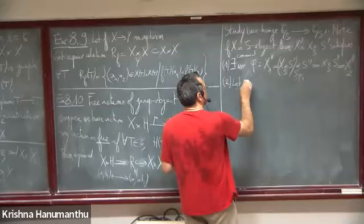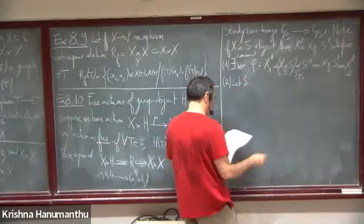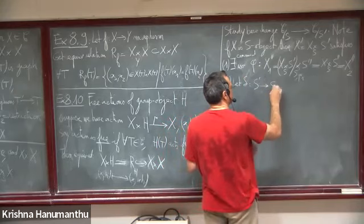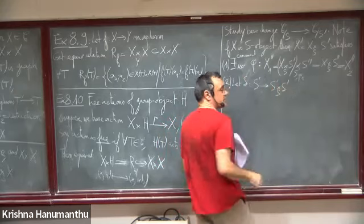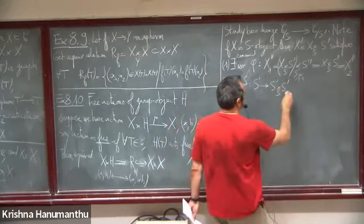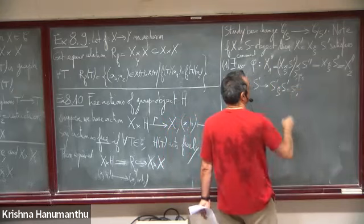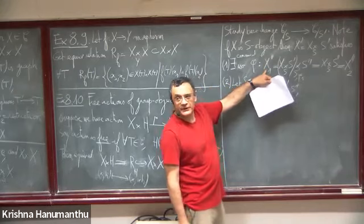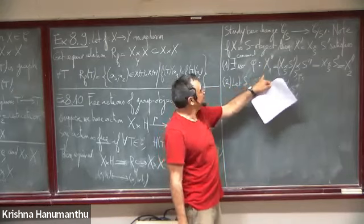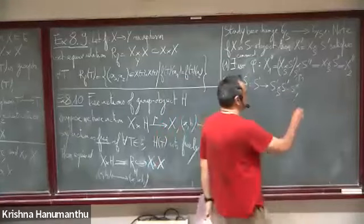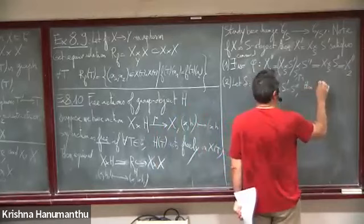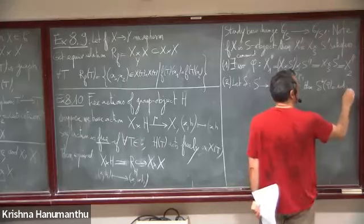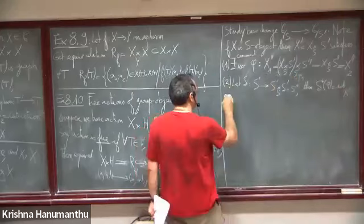If we denote by δ the diagonal map from S' to S'' = S' ×_S S', then pulling back the isomorphism via δ gives the identity morphism of X'. Third, pulling back via the triple fiber product projections gives a commutative diagram — the cocycle condition.